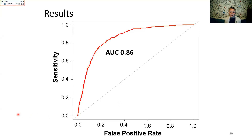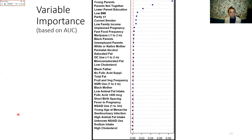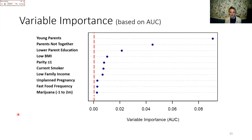For our random forest model, we had a rather high AUC value of 0.86 — looking quite good for prediction. For the variable importance plot, I'll focus on the top 10 predictors to make it easier to see.